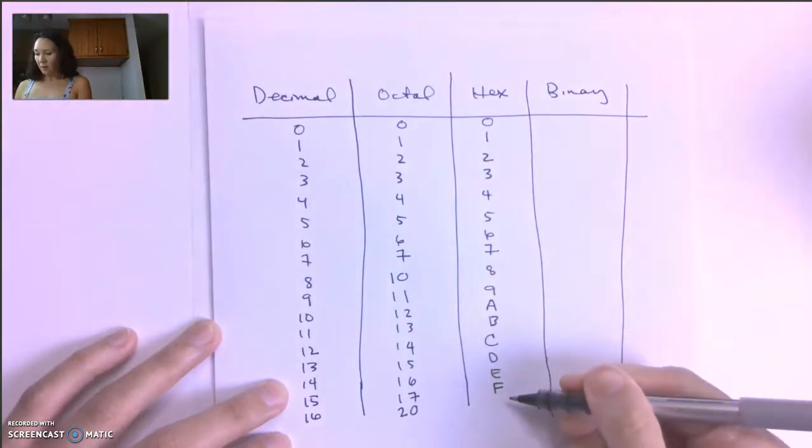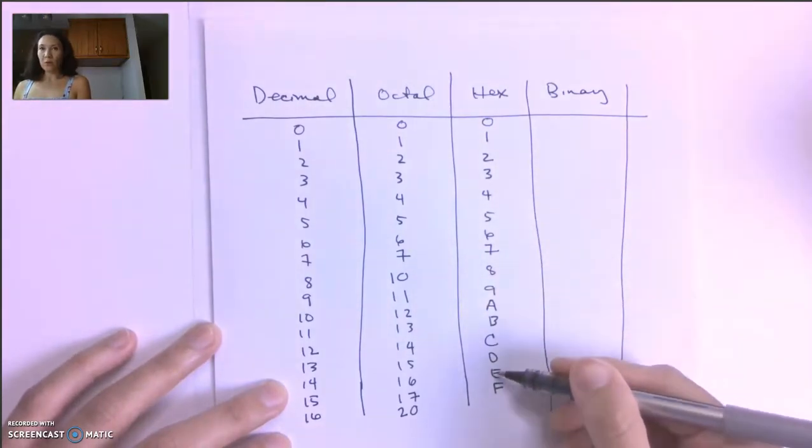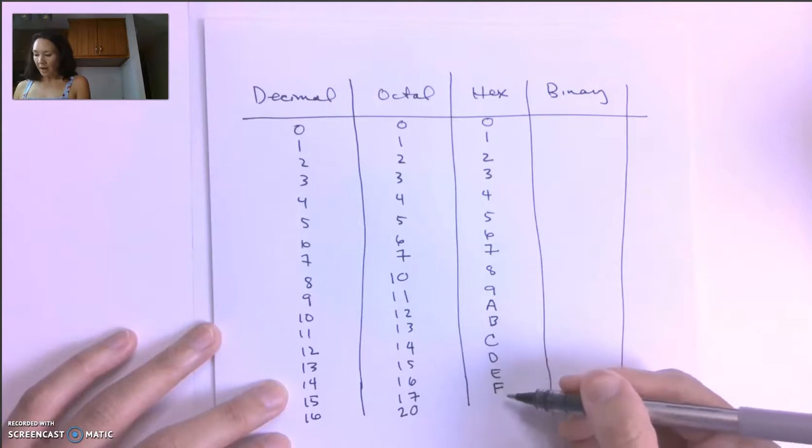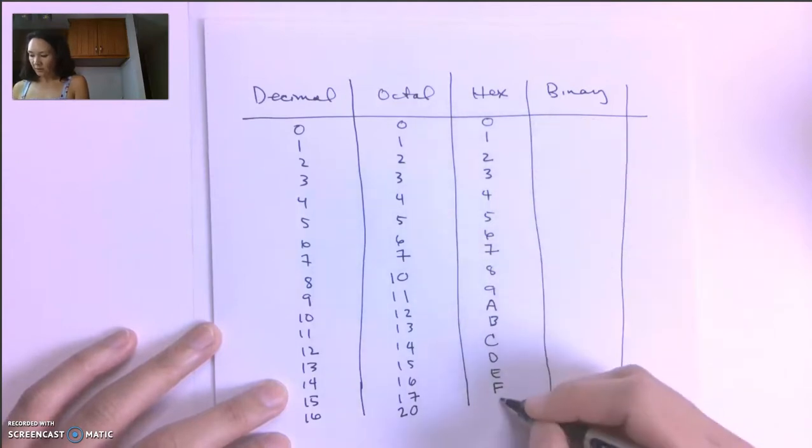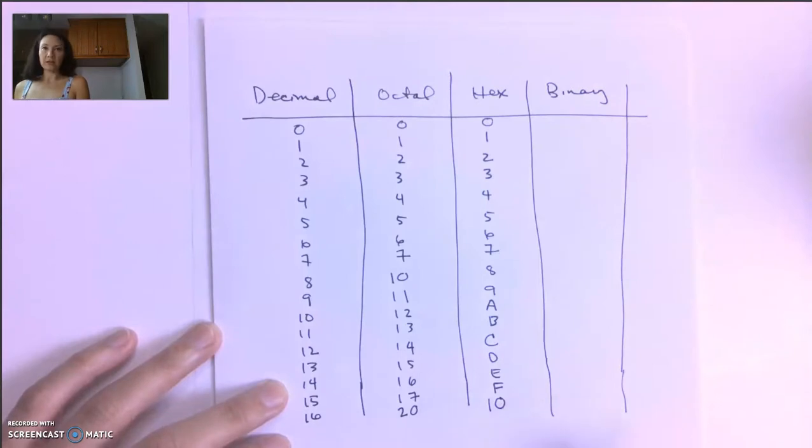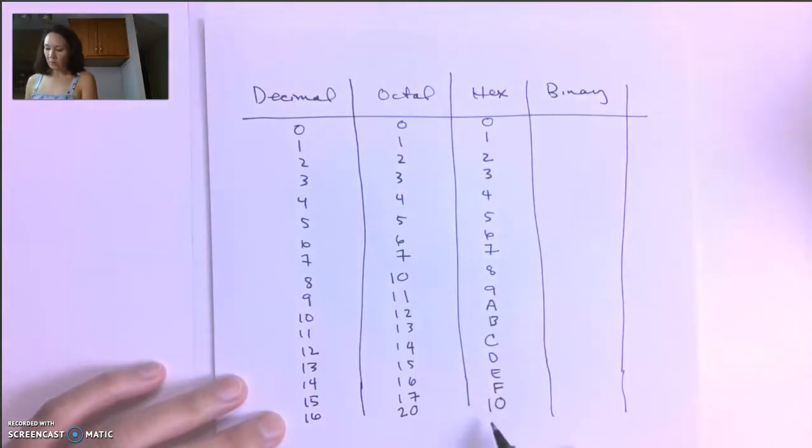So these are all of our primary building blocks. When we start over after F, we start over with a 0, and we put a 1 in front of it, and that's what gives us 16. So after we go from 0 to 15, we have to start over with our numerals, and that's when we put a 1 in the tens place.